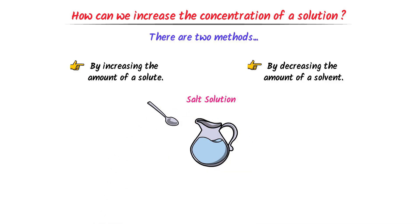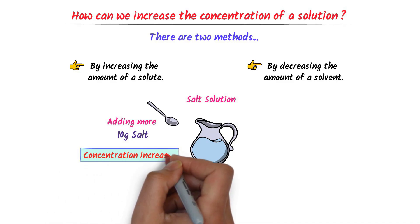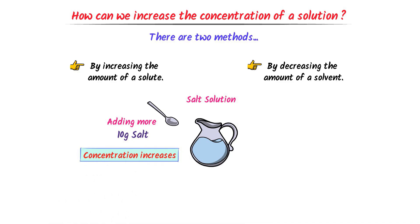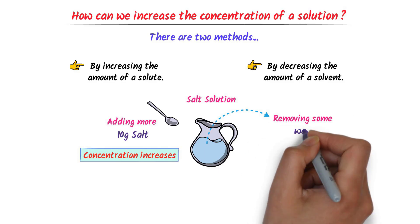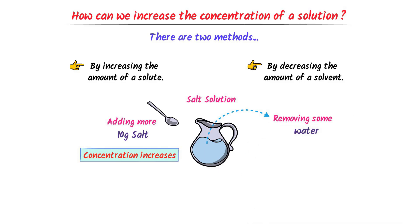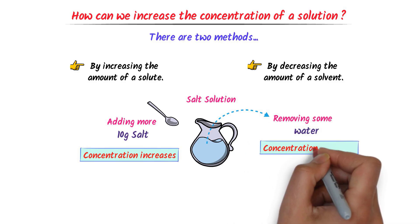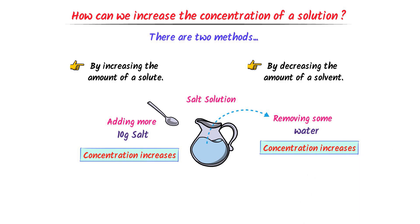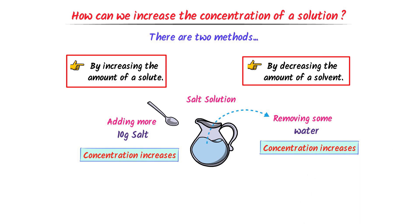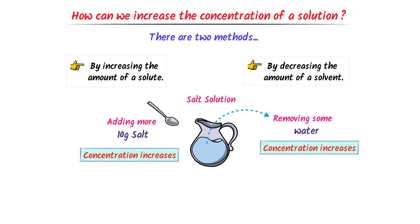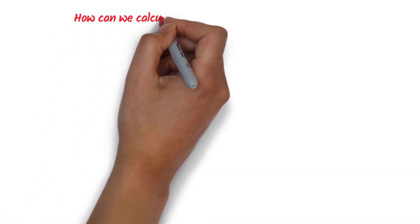Through the first method, I increase the amount of solute — I add 10 grams more salt to this solution. As a result, I increase the concentration of the solution. Through the second method, I decrease the amount of solvent — I remove some water from the jug. As a result, I increase the concentration of the solution. By these two different methods we can increase the concentration of a solution.